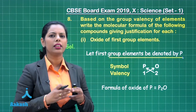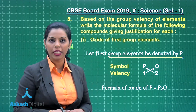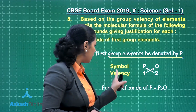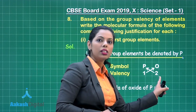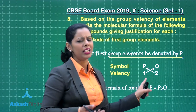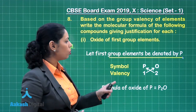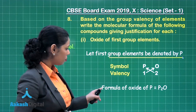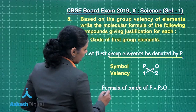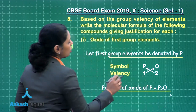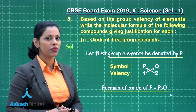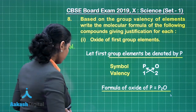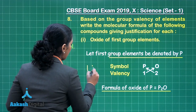Assume the first group element is denoted by P. The symbol for oxygen is O. The valency of oxygen is 2, while the valency of a group 1 element is 1. Criss-crossing the valencies to obtain the molecular formula gives P₂O. This provides both the justification and the correct molecular formula, earning 1 mark.